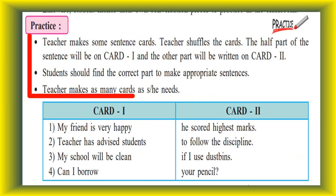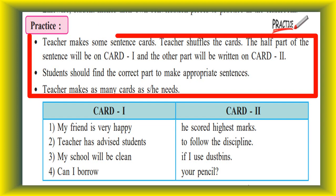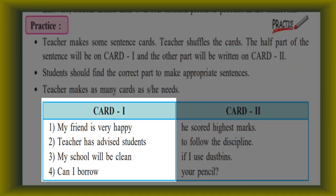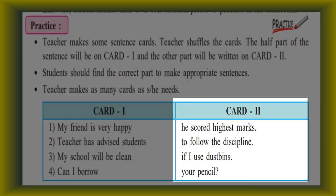The teacher shuffles the cards. The first half of a sentence is written on card one and the other part on card two. Students should find the correct part to make appropriate sentences. The teacher makes as many cards as needed. Here is given one activity with card one and card two containing sentences such as: My friend is very happy, Teacher has advised students, My school will be clean, Can I borrow.